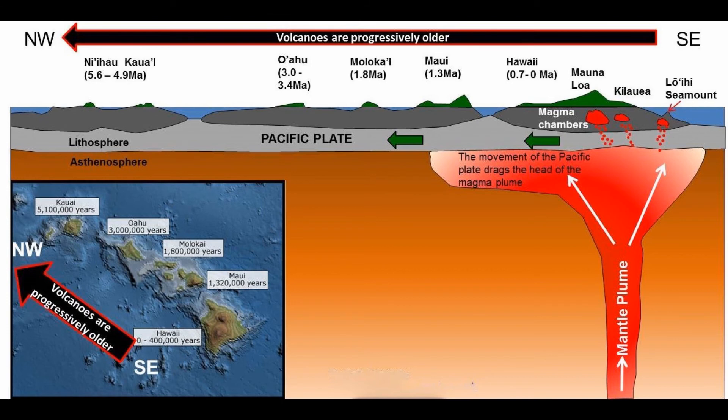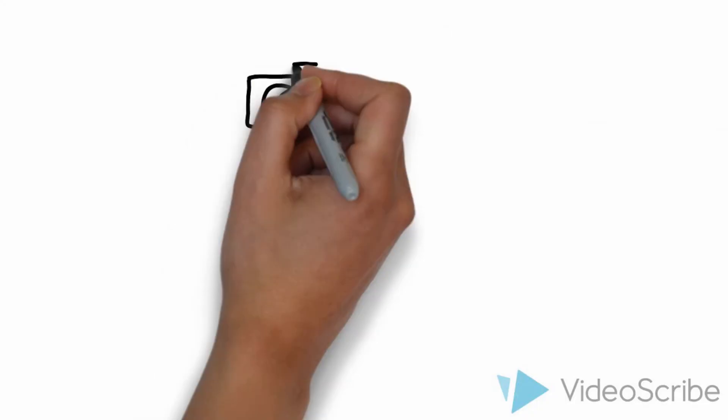Now in this image, we can see the formation of the island chain of Hawaii. We can see that the most active sections of Hawaii are Mauna Loa, Kilauea, and we also have a new seamount that is being formed right underneath this intraplate hotspot.